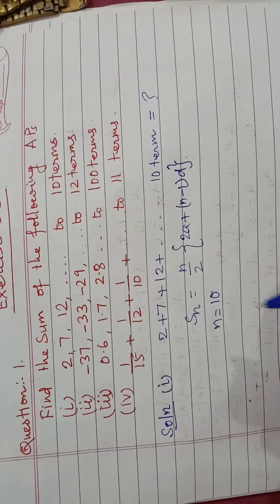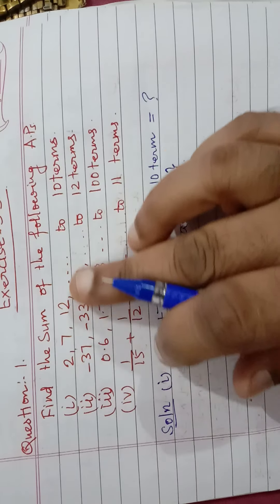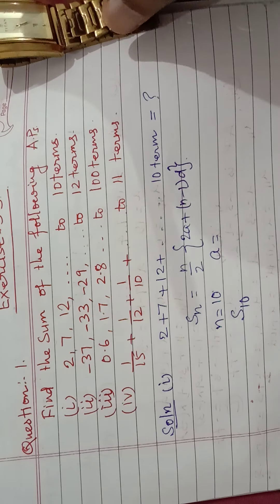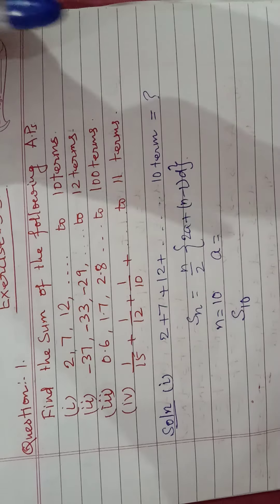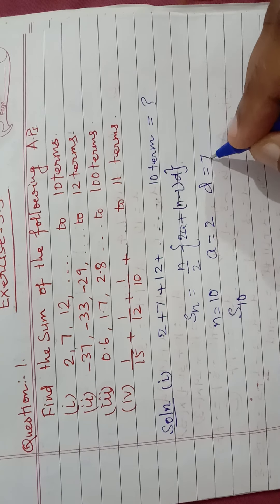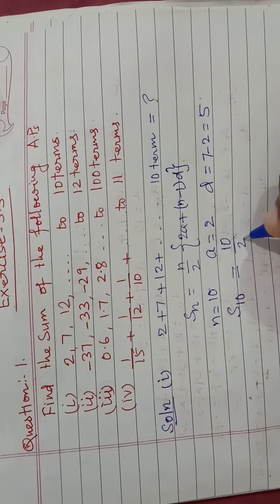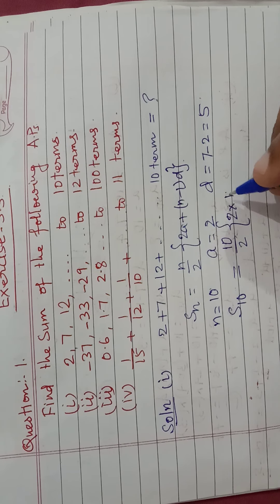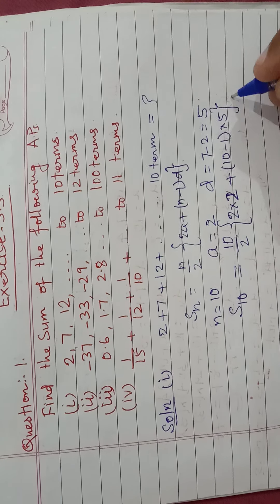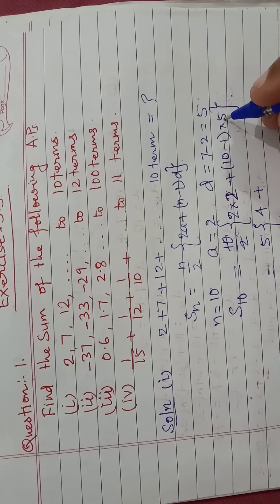The number of terms given is ten, so we have to find S10. Here a is equal to 2 and the common difference is a2 minus a1, so 7 minus 2 equals 5. S10 is equal to 10 by 2 into 2a, where a equals 2, plus 10 minus 1 into d, where d equals 5. Cancelling, we get 5 into 4 plus 9 into 5, which is 4 plus 45.